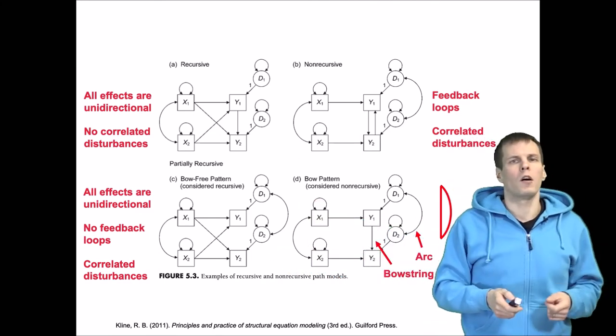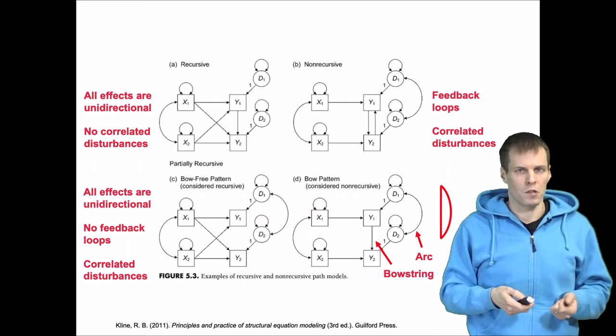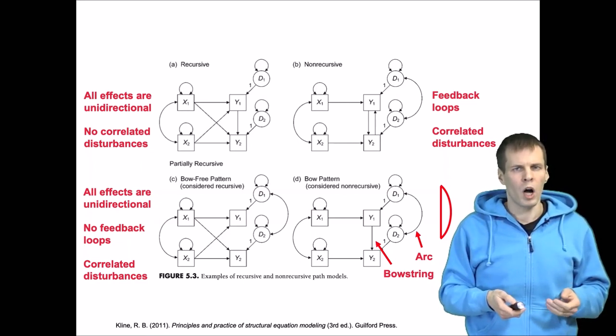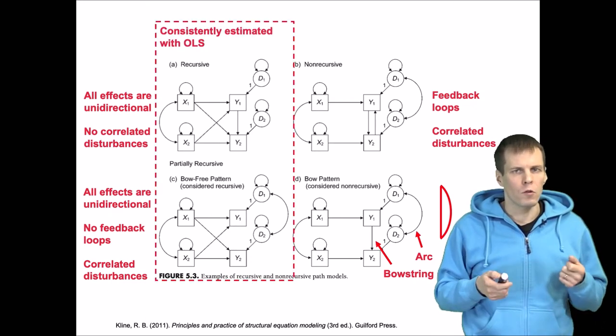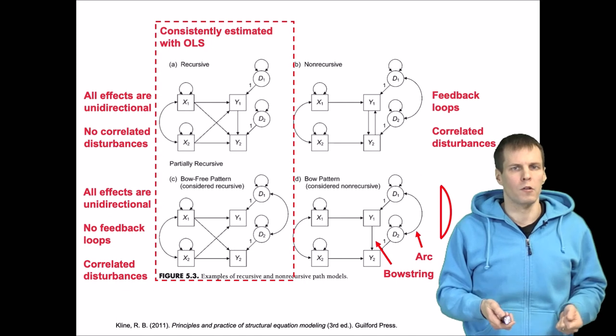The important thing about estimation and identification is that the models on the left-hand side are always identified and they can also be consistently estimated with normal OLS regression analysis.